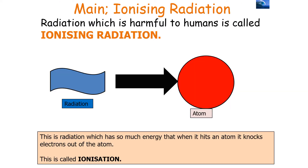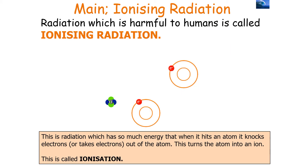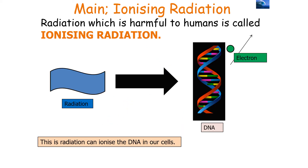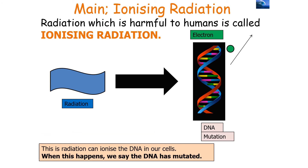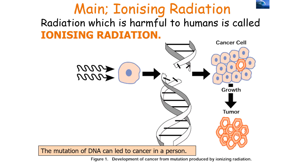Radiation which is harmful to humans is called ionizing radiation. This is radiation which has so much energy that when it hits an atom, it knocks the electrons out of the atom — which we call ionization. When this radiation takes place in the atoms of the DNA in our cells, it can cause the DNA to be ionized and mutated. The mutation of DNA can lead to cancer. So ionization of the atoms in DNA can cause a mutation, which then leads to cancer.